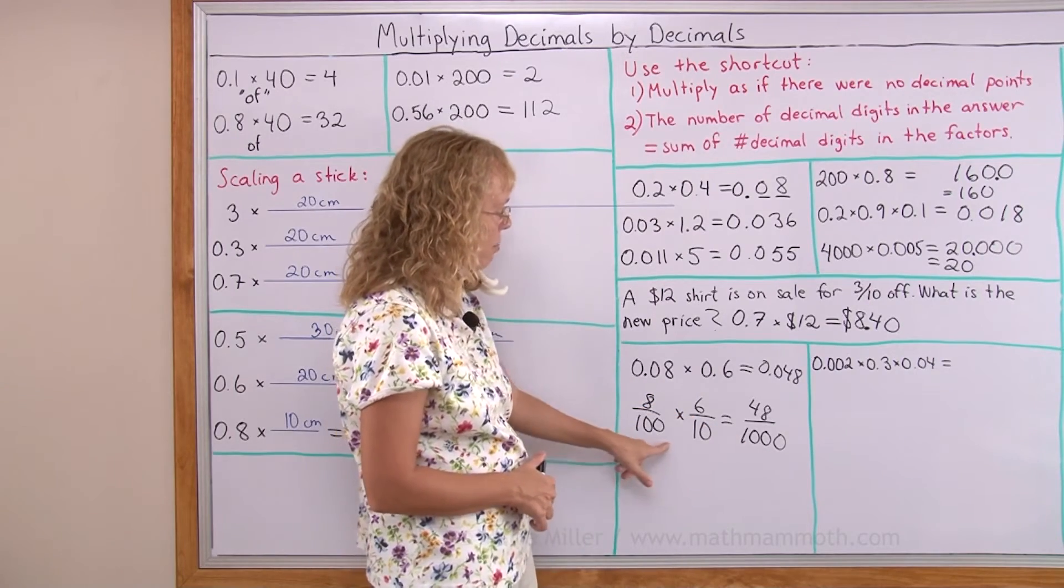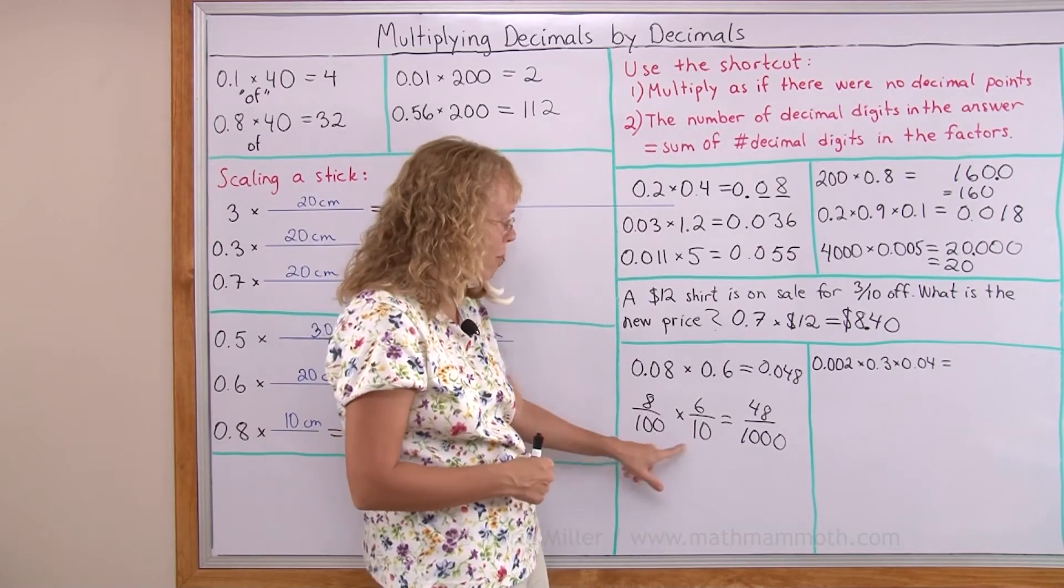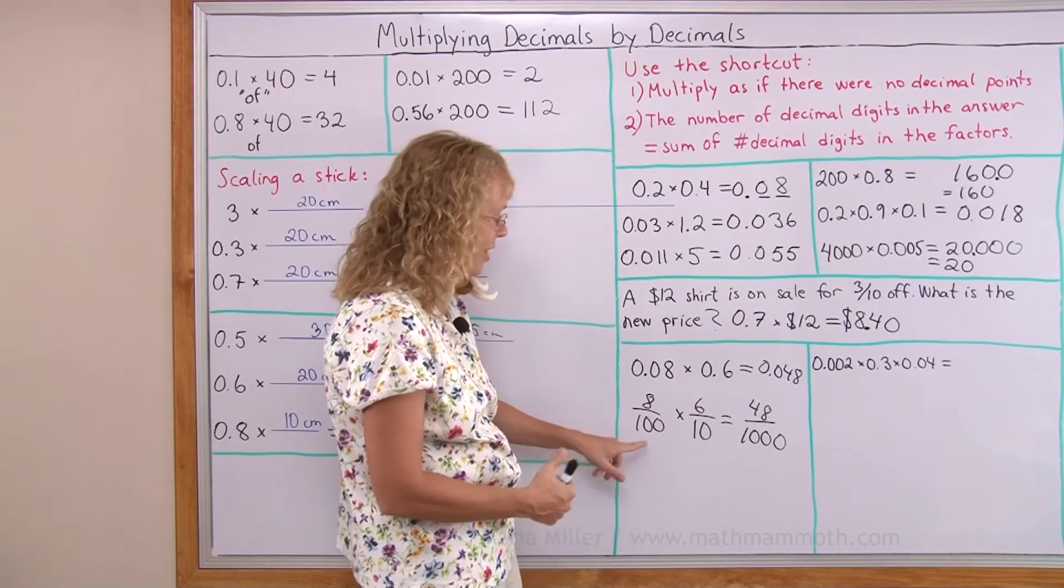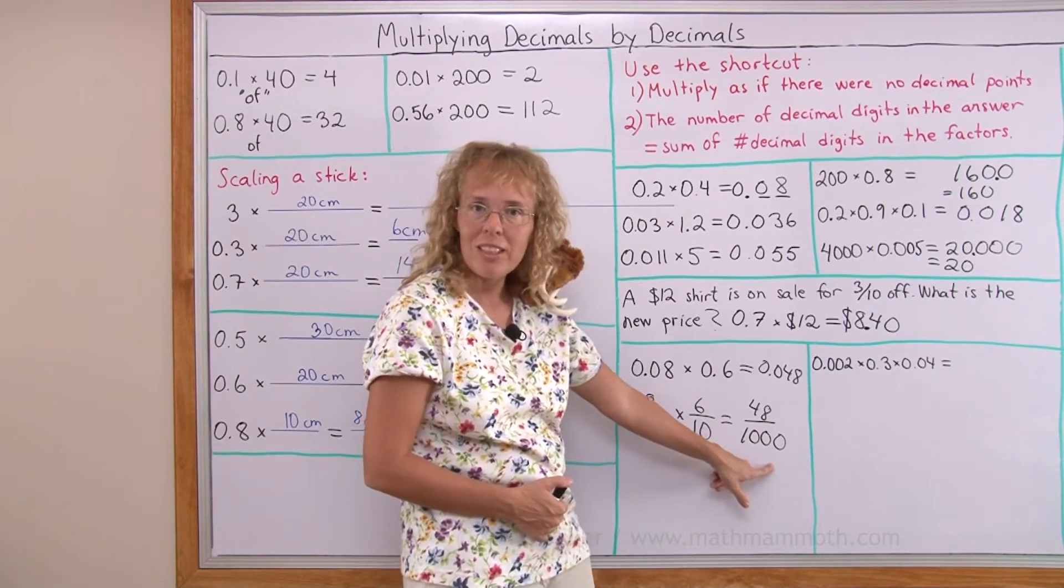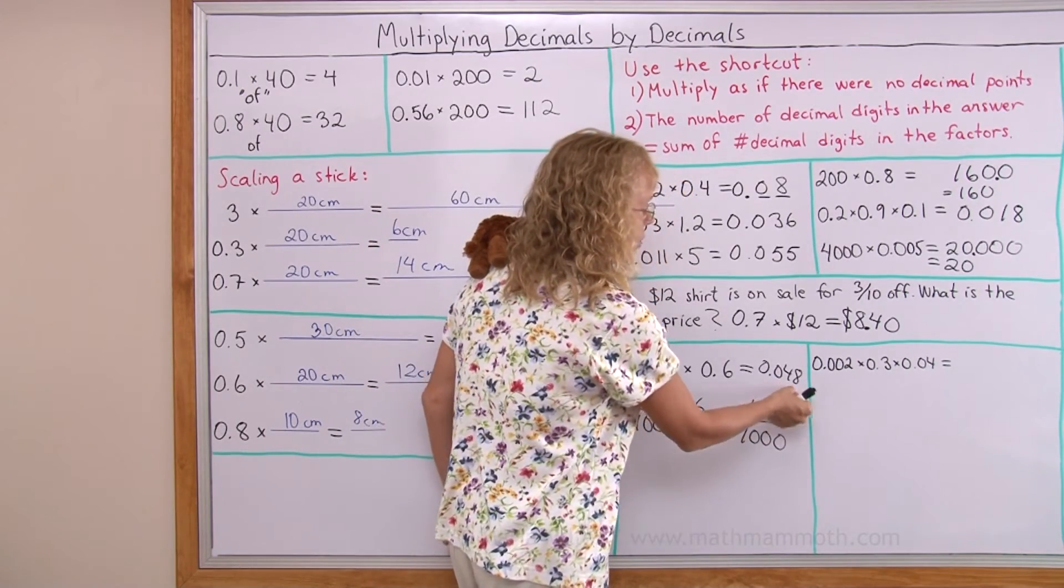And now when I'm multiplying here, hundred times ten, that is multiplied by, you'd go one times one is one and then you gather all your zeros together over here. So you're adding, however many zeros you have here is how many zeros you put into this denominator here. And however many zeros are here is however many decimal digits are here.